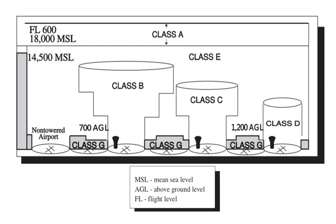In Italy, Class A is used for Rome and Milan TMAs. Class B is not used. Class C is used in all airspace above FL 195, and in military control zones above FL 195 to FL 460 excluded. Class D is used for controlled zones and other TMAs. Class E is used for airways from MEL to FL 115. Class F is not used. Class G is used in all other airspaces and above FL 460.